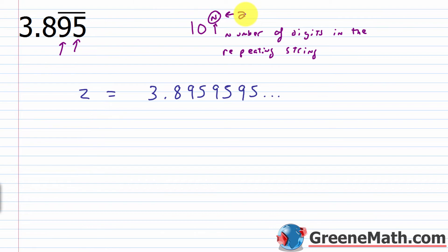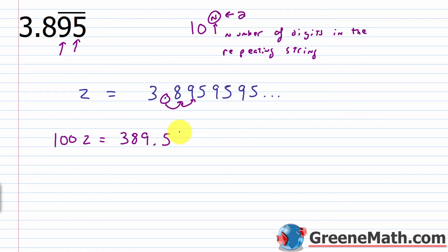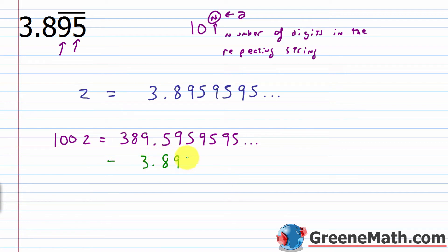Multiplying both sides by 100: on the left I get 100z, and on the right the decimal moves two places to the right, giving me 389.595959... Now I subtract the original equation from both sides. On the right I subtract 3.8959595... and the repeating part cancels. On the left, 100z minus z gives me 99z. For the subtraction on the right: borrowing gives 15 minus 8 equals 7, then the decimal point, then 8 minus 3 equals 5, bringing down 8 and 3.